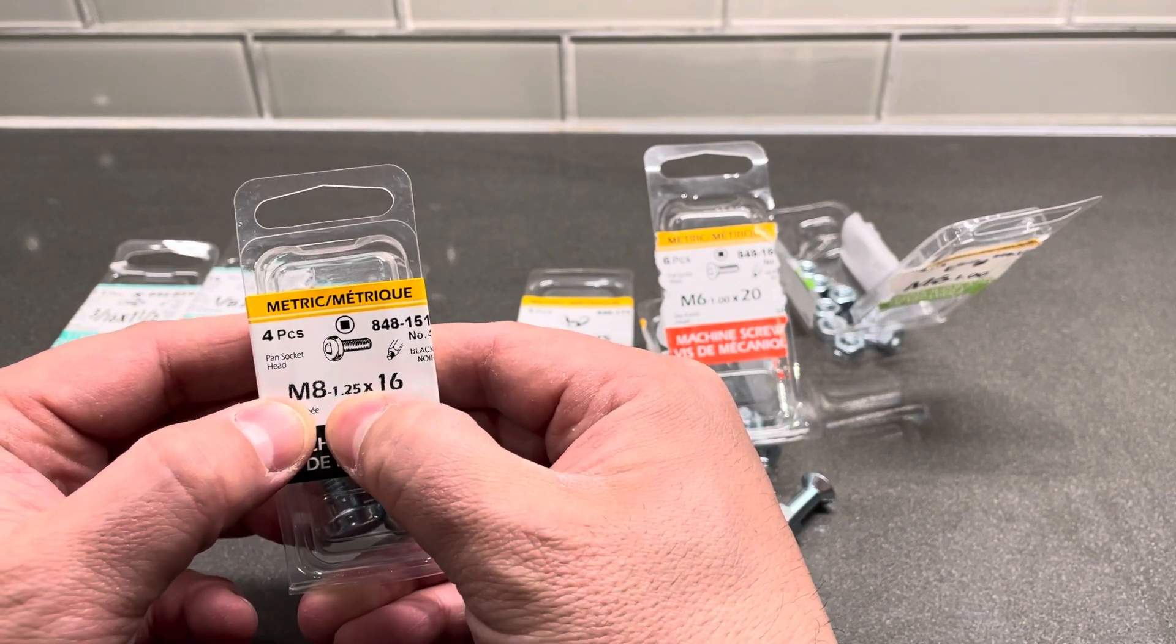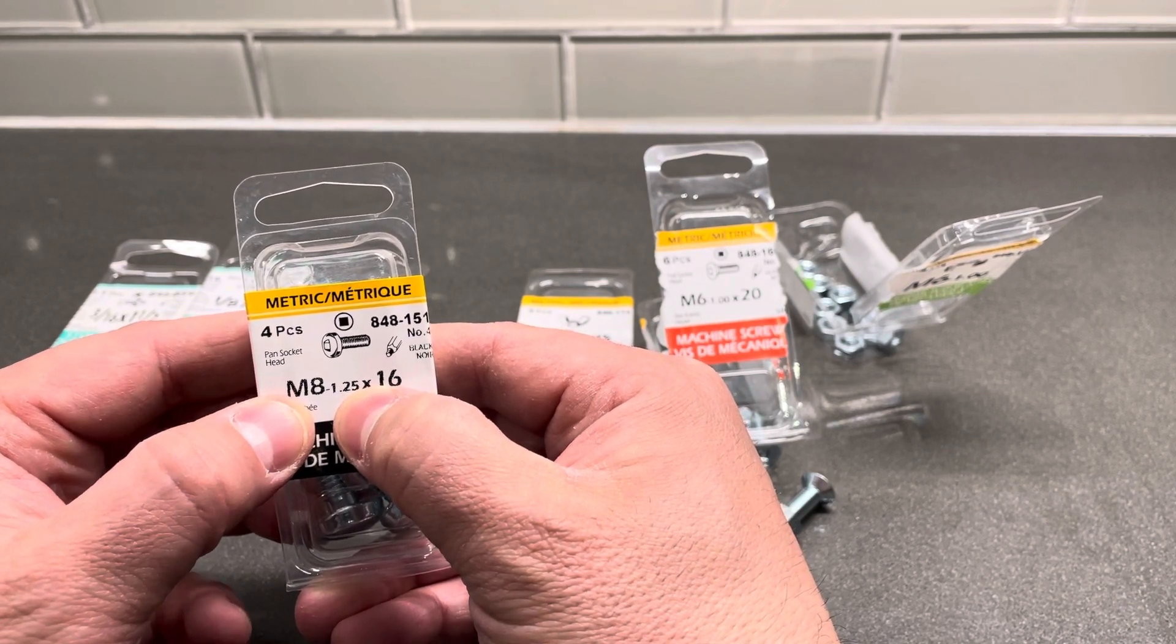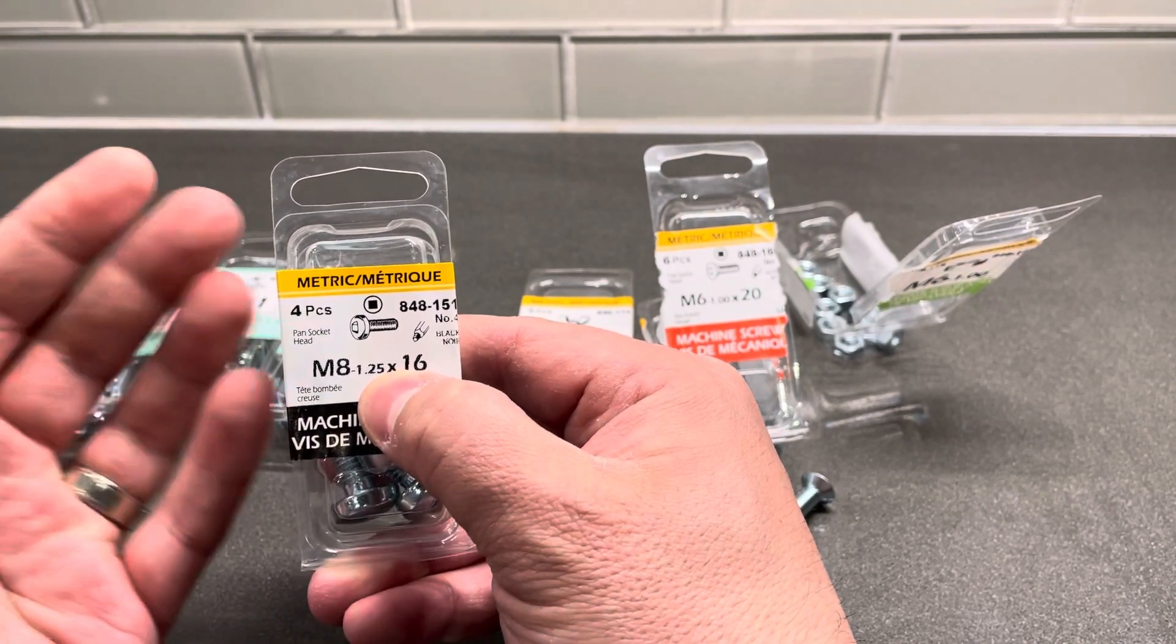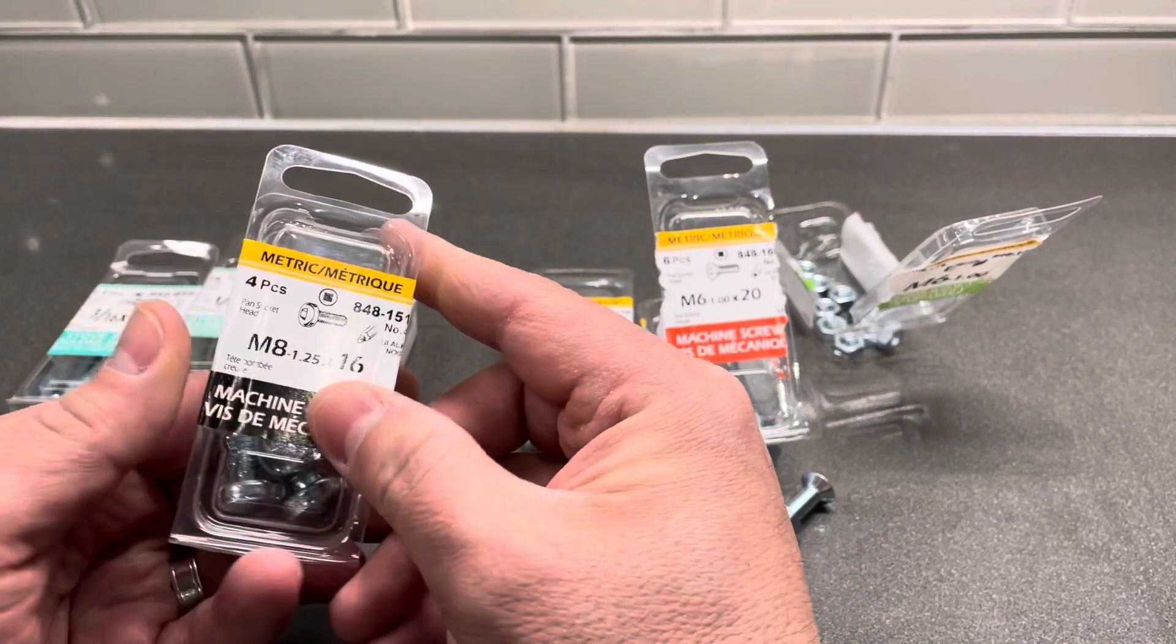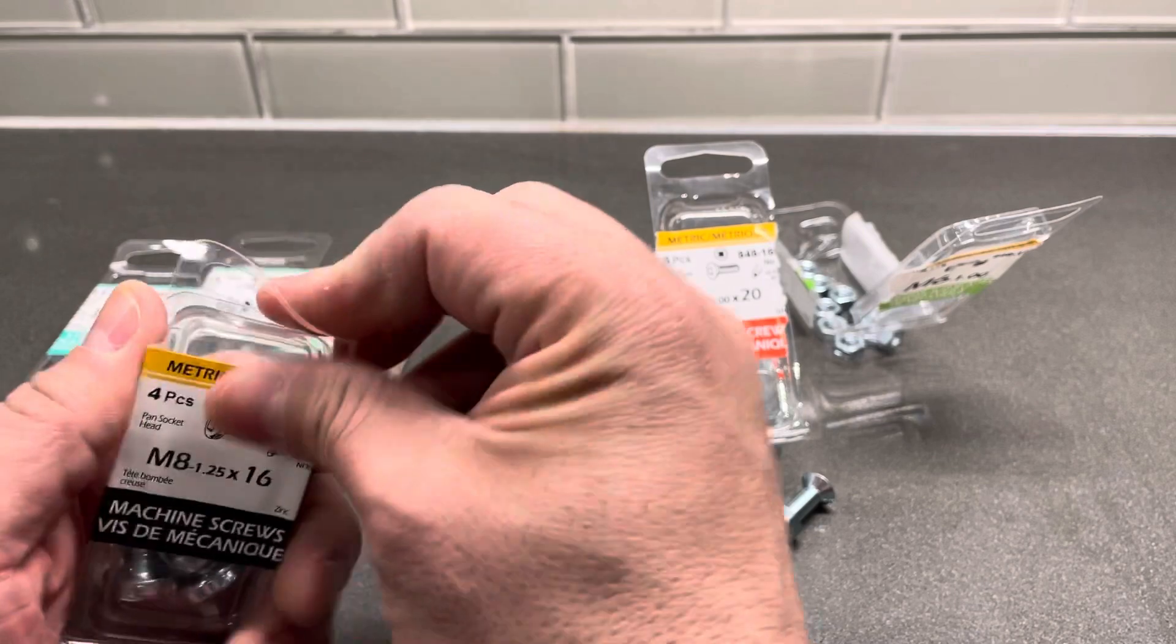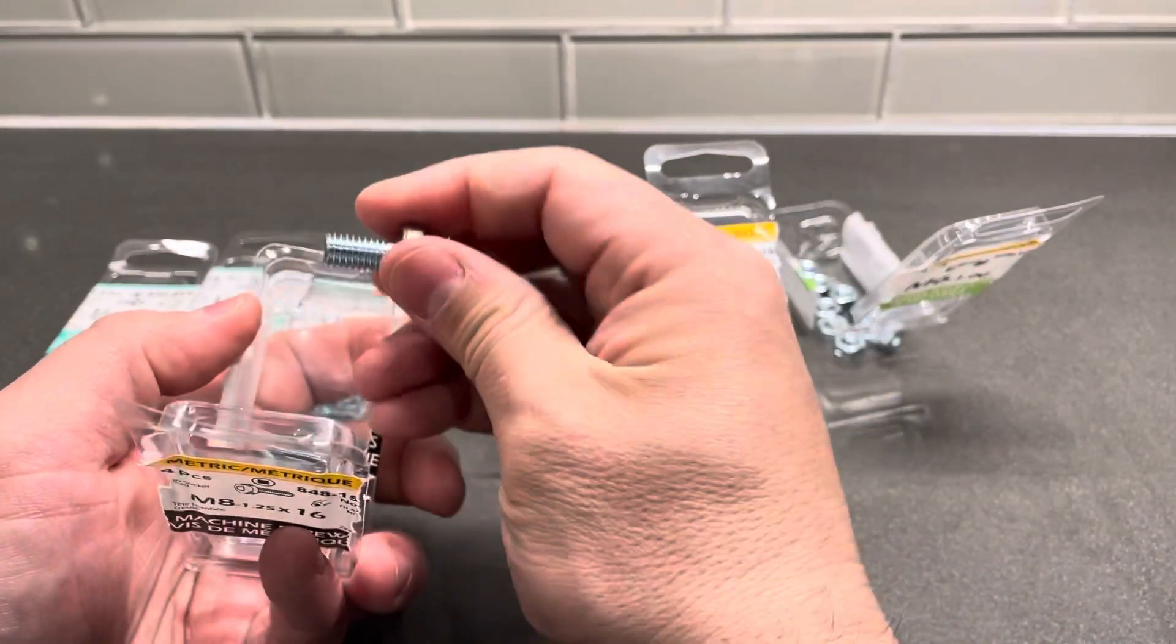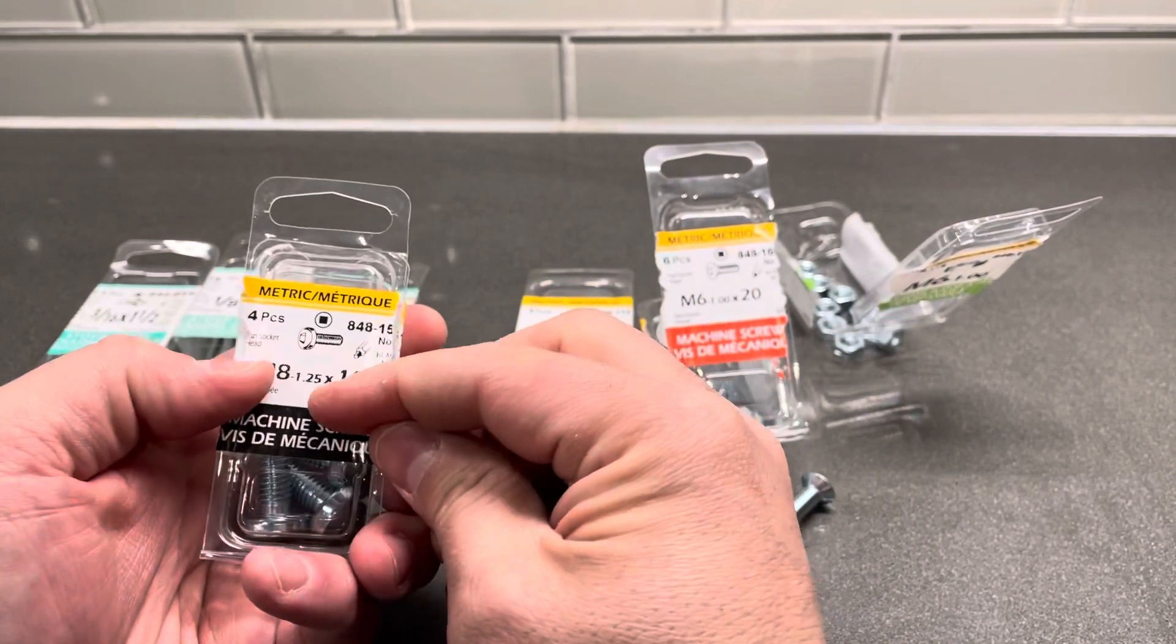The 1.25 is the pitch of the threads, which is essentially the distance between the threads. So distance from thread to thread, the distance would be 1.25 millimeters on this right here, as you can see.